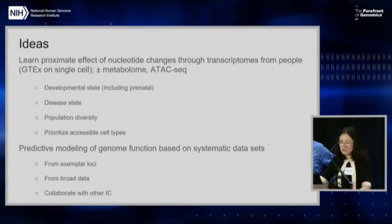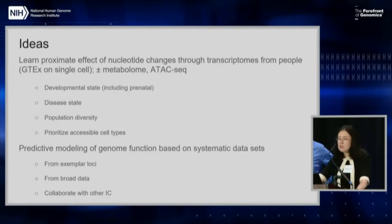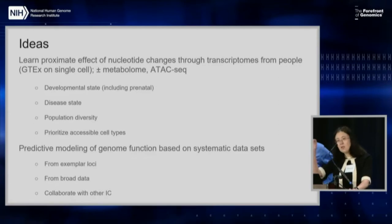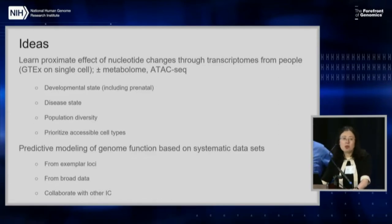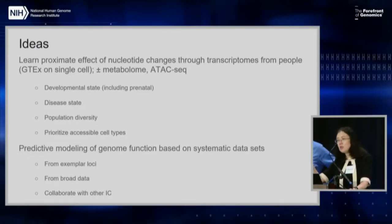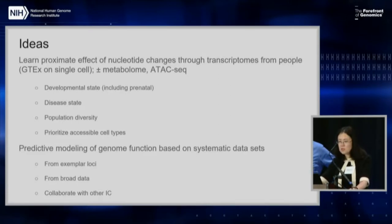We need diversity in terms of different disease states and population diversity, as we've heard throughout the meeting. But realizing we can't take every single cell from all of, say, 400 individuals, we also need to think about accessible tissues — for instance, blood or fibroblasts — and understand to what extent these would represent the diversity we see across other cell types.